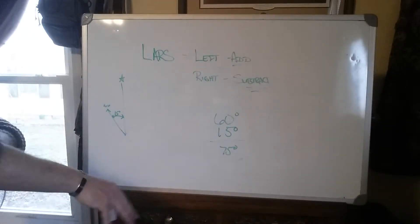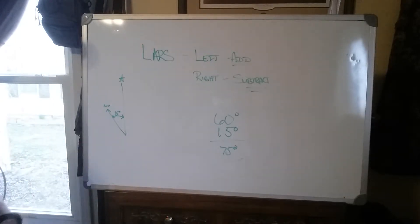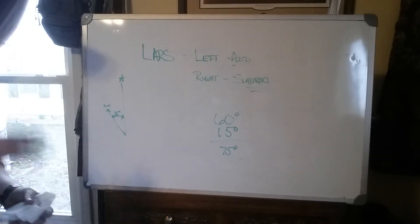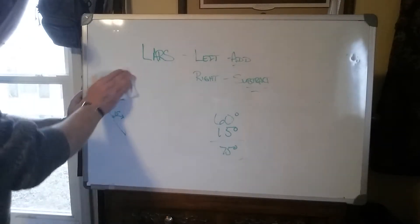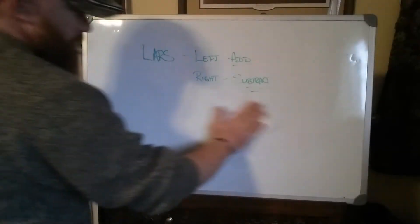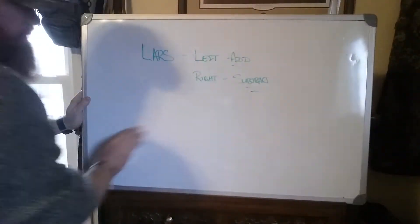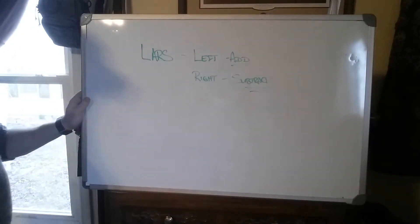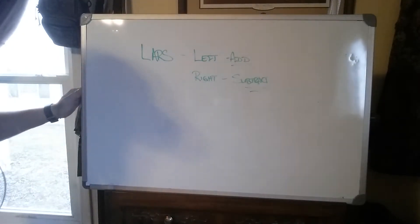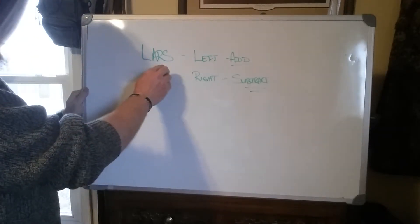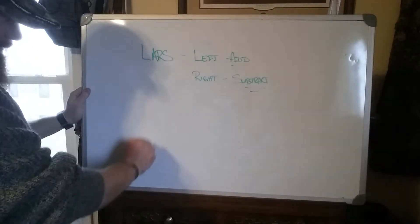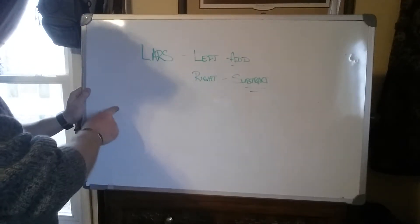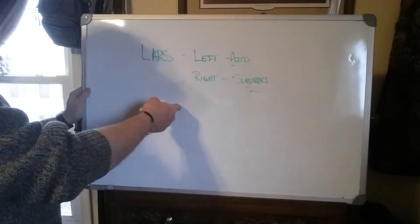Hopefully that makes sense. So basically that's all you've got to know. There are two norths — understand that. Just understand that you have to account for it, and this is how you account for it. The LARS mnemonic: Left Add, Right Subtract. On your declination diagram, if magnetic north is to the left, you add; if it's to the right, you subtract. And basically what you're doing is figuring out the difference between magnetic north and true north.